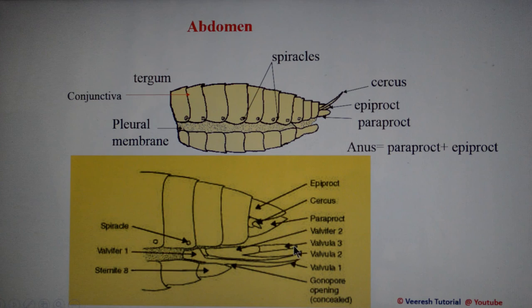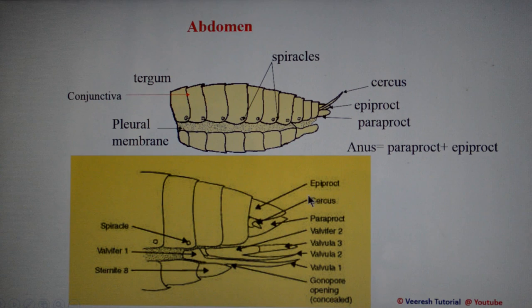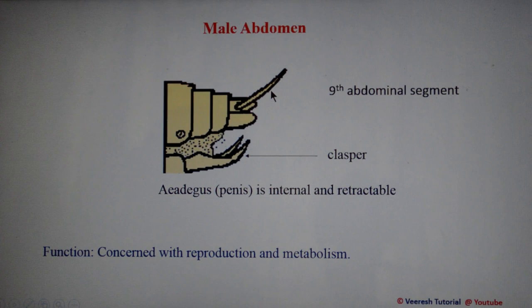The dorsal and ventral valvulae help in digging the soil during oviposition, whereas the median valvula 2 acts as an egg guide during egg deposition. The posterior part of the abdomen also consists of three lobes: the epiproct and a pair of paraprocts, which form the anus. A pair of sensory structures called cerci are also present. The female genitalia are present on the eighth and ninth abdominal segments. In the male, the genitalia are present on the ninth abdominal segment, and a clasper helps in clasping the female during mating. The abdomen is mainly concerned with reproduction and metabolism.